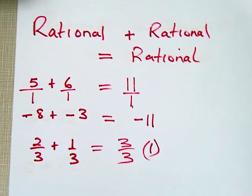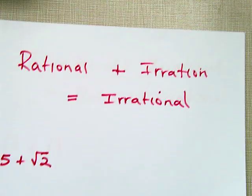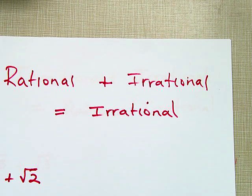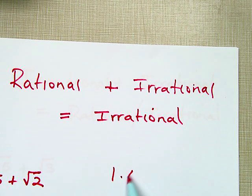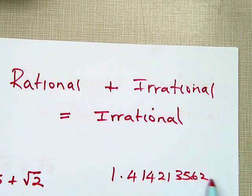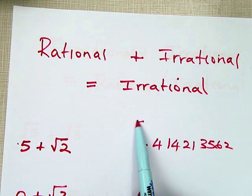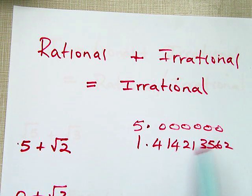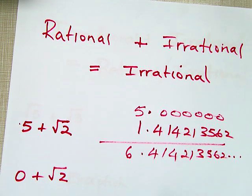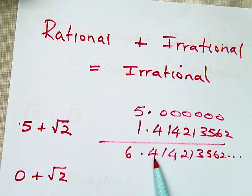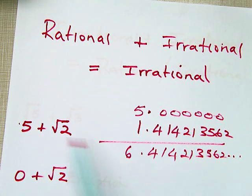What if we do rational plus an irrational number? This always gives us an irrational number. For example, if I take 5 and add the square root of 2 — which is something like 1.414213562 — adding 5 to that gives us 6.414213562, on and on. There is no order, no repeating pattern, and it goes on forever. So rational plus irrational is still irrational.